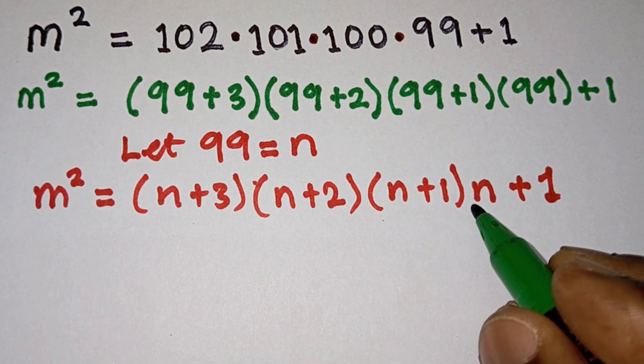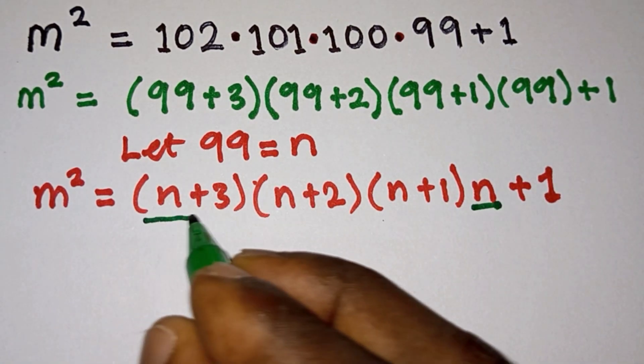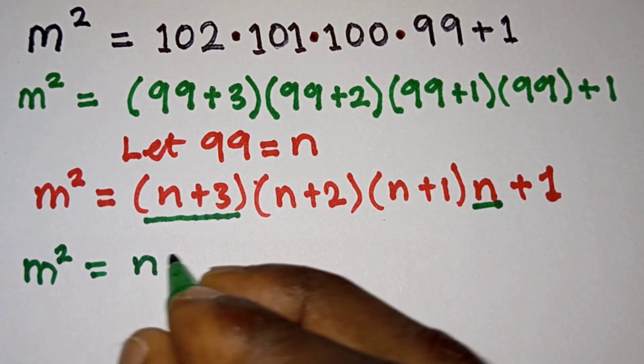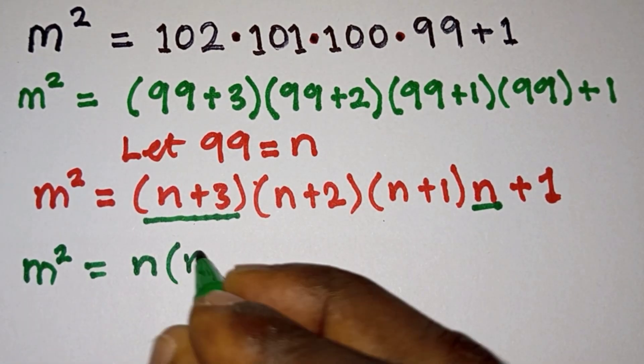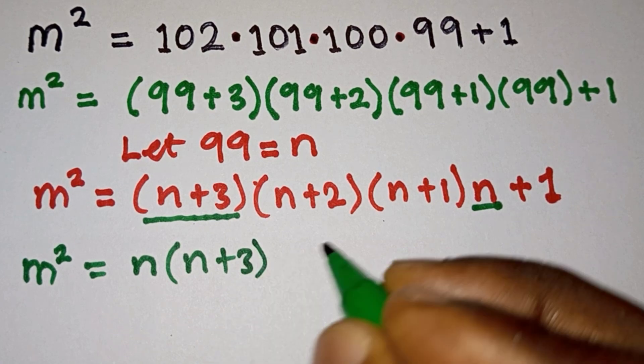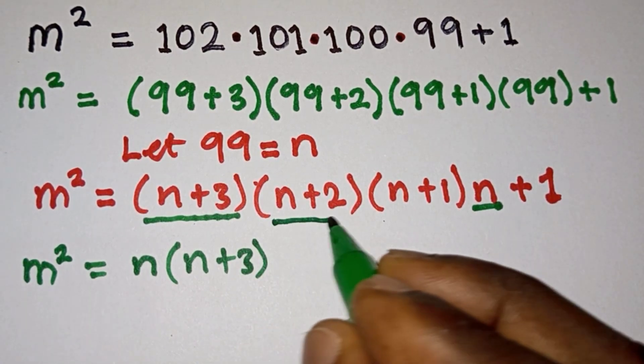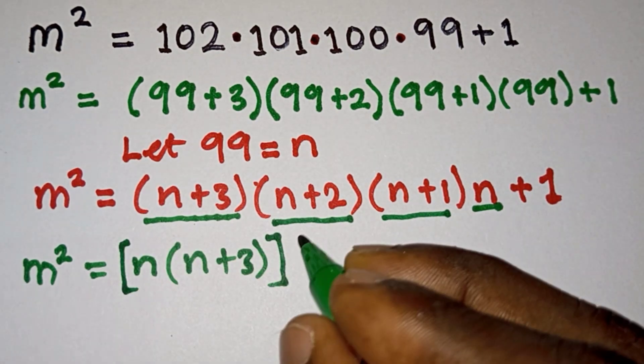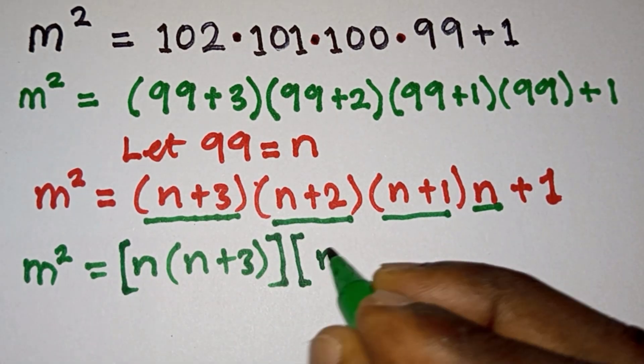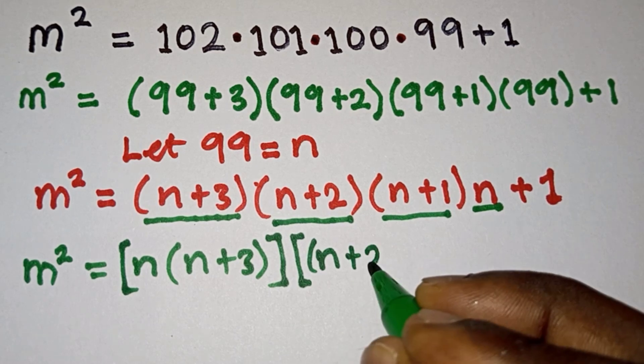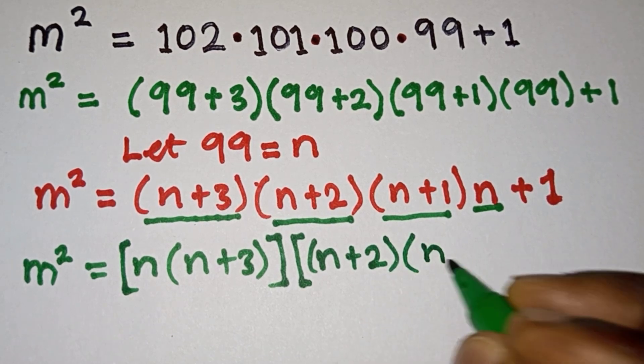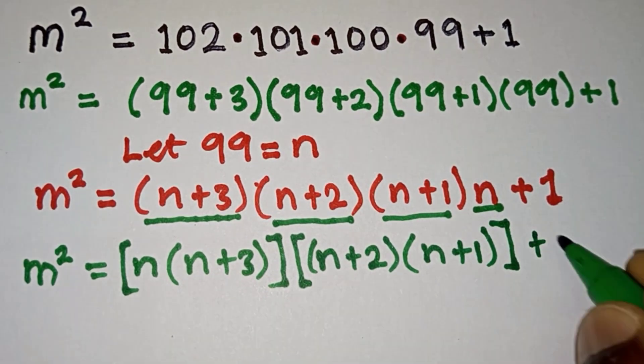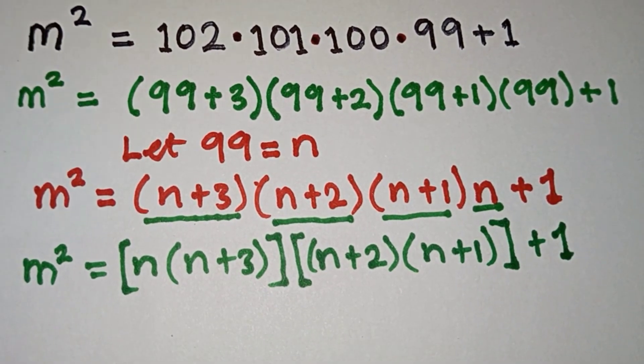Now let's go ahead and multiply this n by the whole of this one, so we would have m² = [n(n+3)][(n+2)(n+1)] + 1.